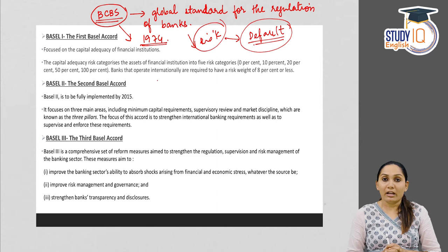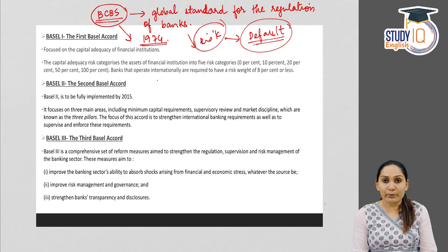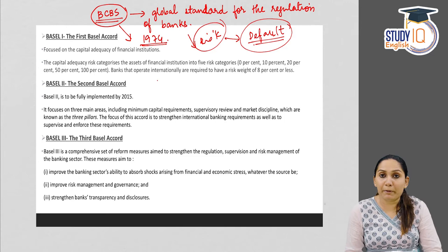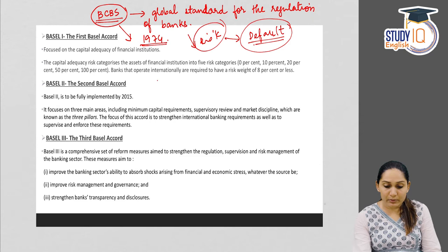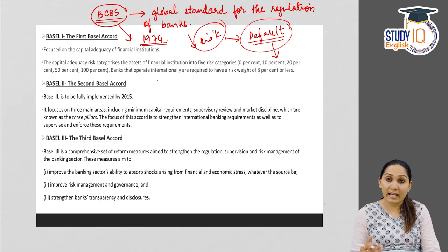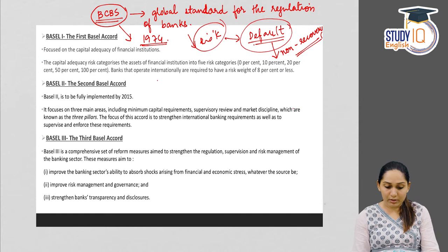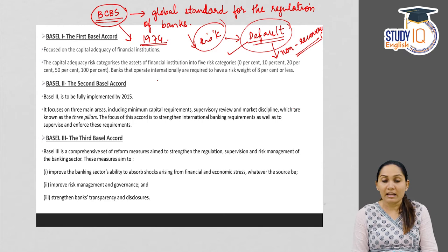To counter the risk of default, banks need to be well prepared — just as in personal life you might take insurance against uncertainty. Banks have to set aside a part of their capital as security against the risk of default or risk of non-recovery. Basel norms provide guidelines and standards to prepare banks to face these contingency situations.